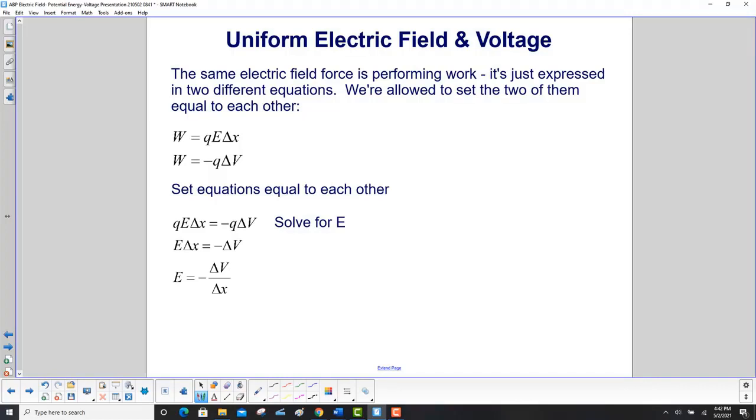The same electric field force is performing work. It's just expressed in two different equations. We're allowed to set the two of them equal to each other. So we have work is qE delta x and work is also minus q delta V. Set them equal to each other. We have qE delta x equals minus q delta V, and we want to solve that for E. So first we divide through by q and they cancel out, and then we divide through by delta x. And we have E is equal to minus delta V over delta x.